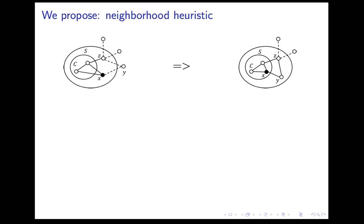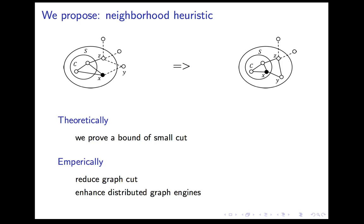In our paper, we propose a heuristic that allocates tightly connected edges to the same part. Theoretically, we prove a bound of small cut. Empirically, our method can reduce graph cut and improve the performance of distributed graph engines.